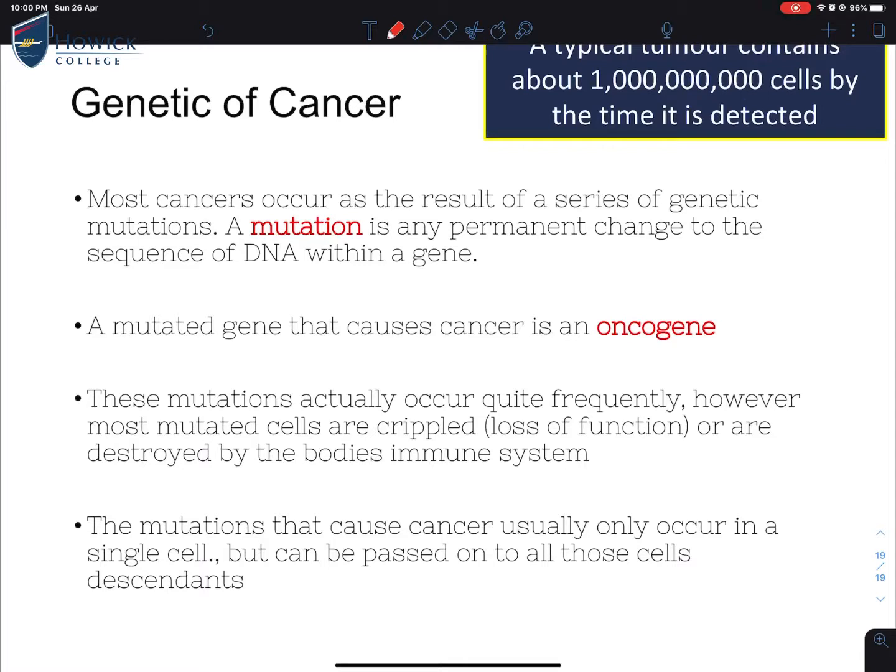However, mutations can also occur due to environmental exposure. For example, if you eat a lot of red meat, red meat is considered to be carcinogenic. If you smoke a lot, you aggravate your lung cells, and the aggravation could potentially mutate your lung cells to produce cancer. The mutated gene that causes cancer is called oncogene.